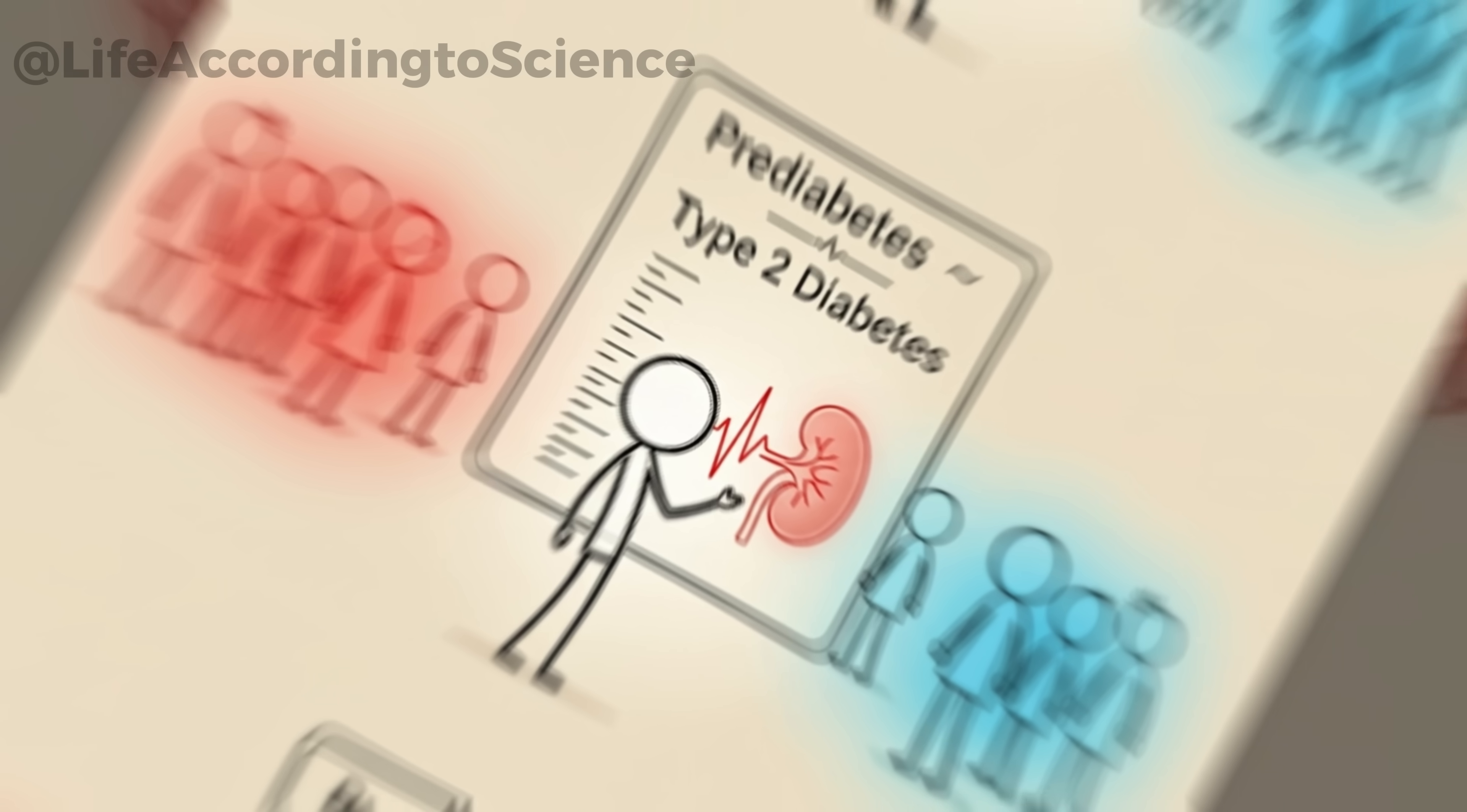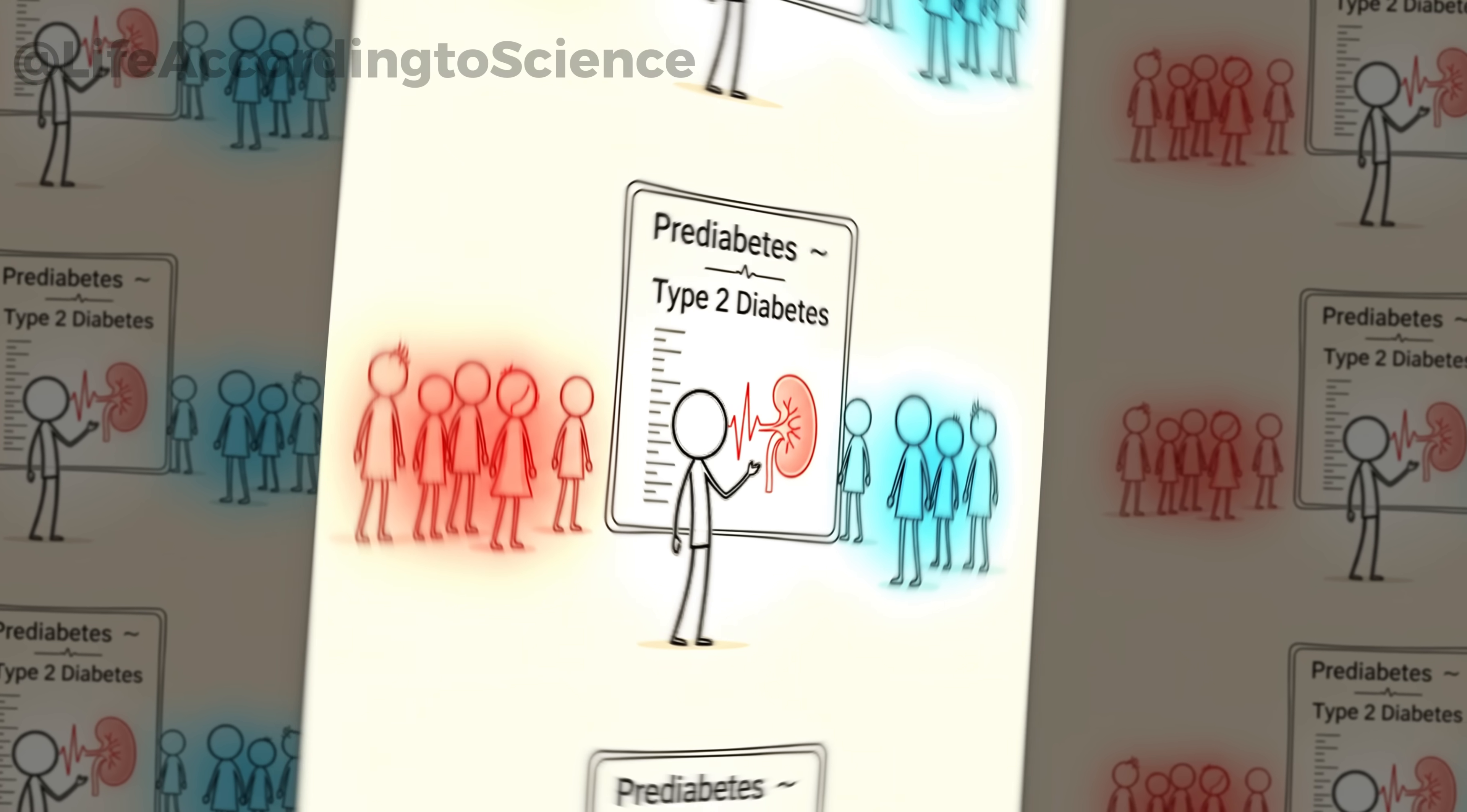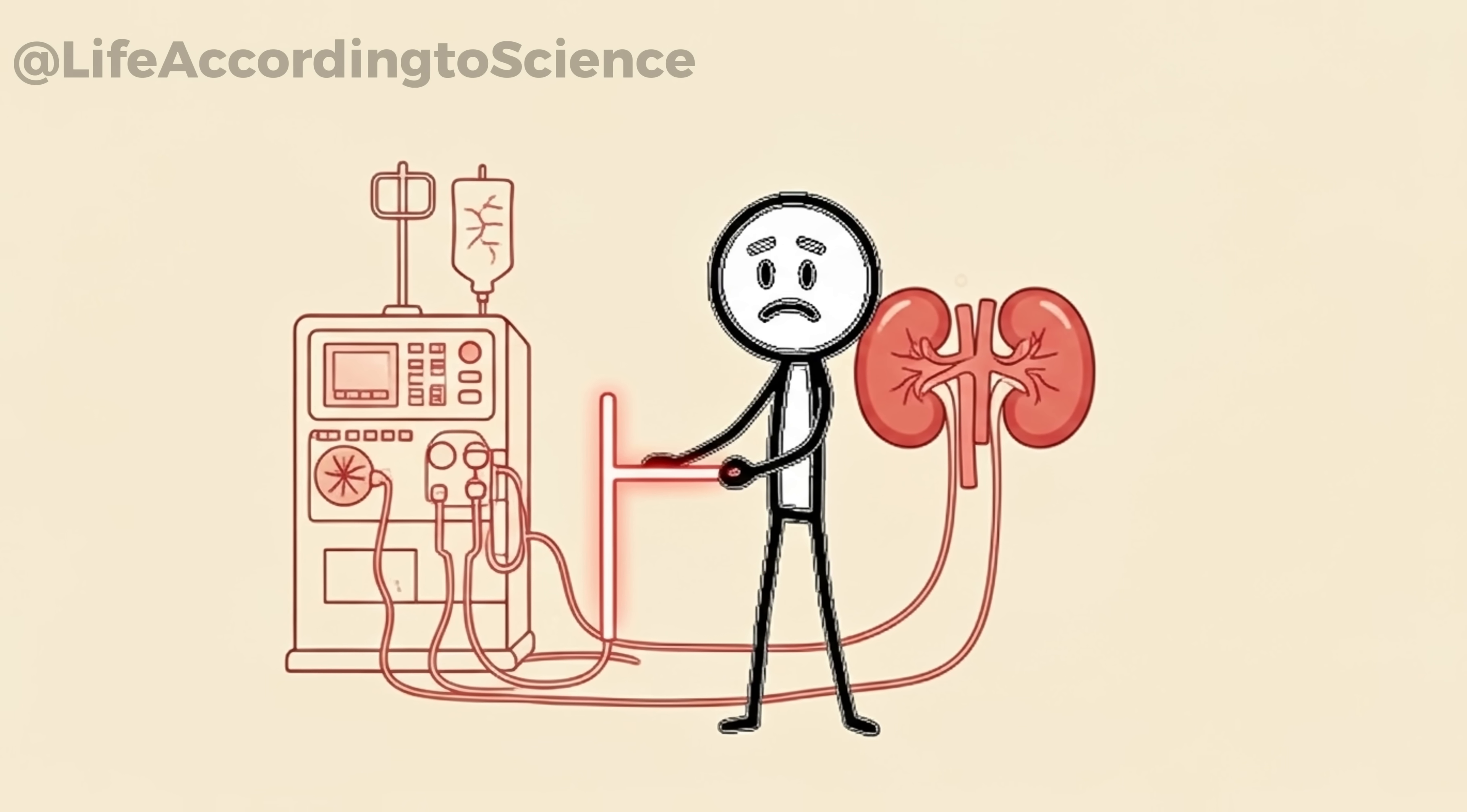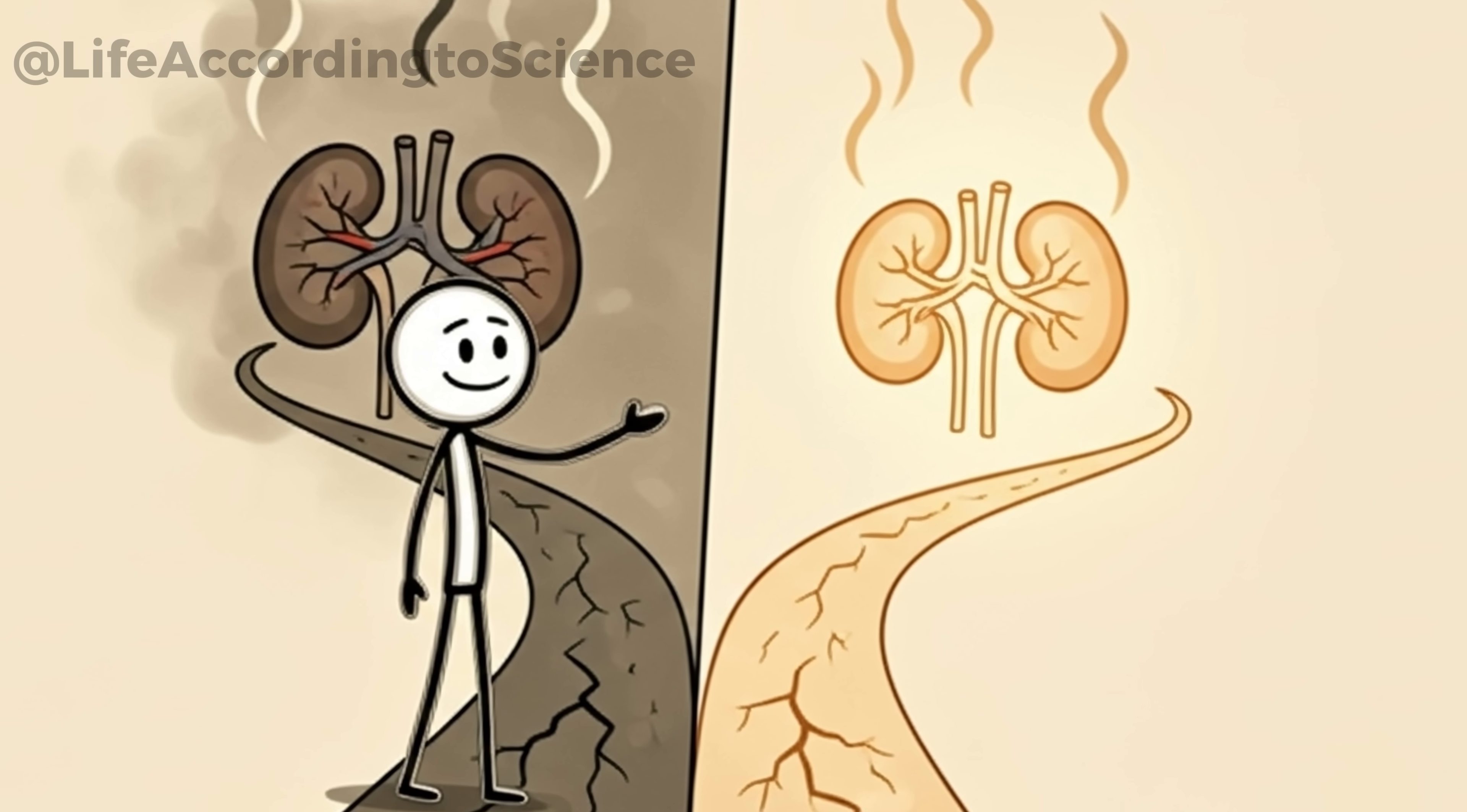Researchers have found that even moderate reductions in sugar intake can significantly lower the risk of progressing from pre-diabetes to type 2 diabetes. And fewer diabetics means fewer people heading toward dialysis machines. So, while you may see sugar as harmless pleasure, for your kidneys, it can be the difference between lifelong health and a slow, silent decline.